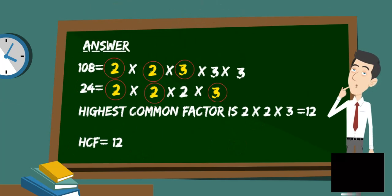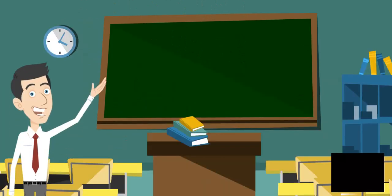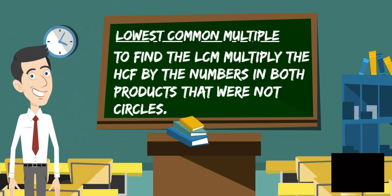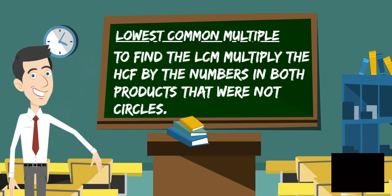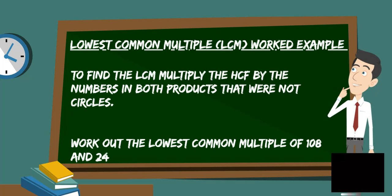The highest common factor is 12. To find the LCF, multiply the HCF by the numbers in both products that were not circled. Work out the lowest common multiple of 108 and 24.